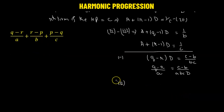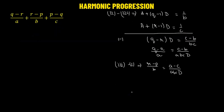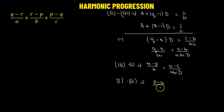Similarly, subtracting equation 1 from equation 3 gives (r minus p) over b equals (a minus c) over abc times d. And subtracting equation 2 from equation 1 gives (p minus q) over c equals (b minus a) over abc times d.